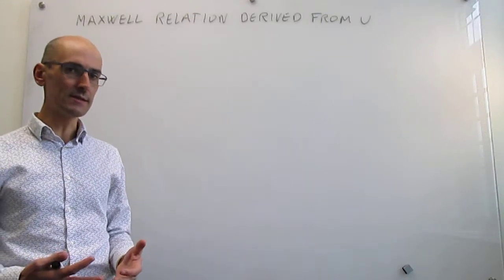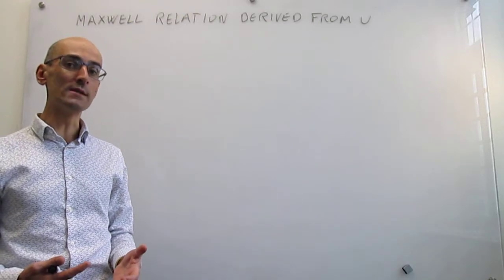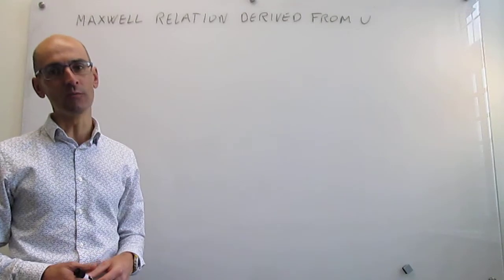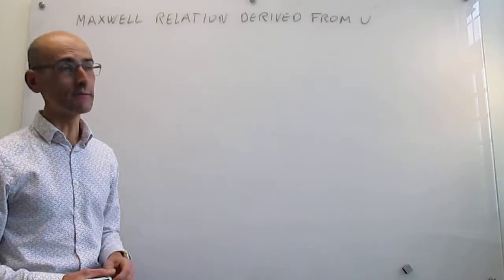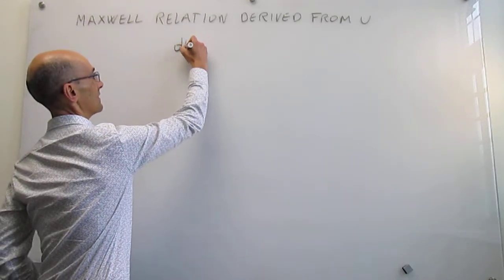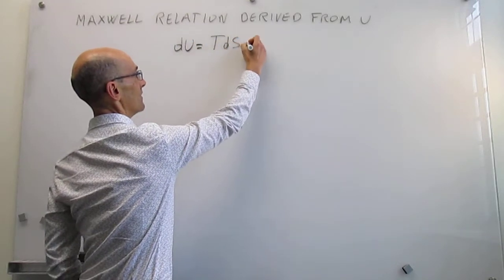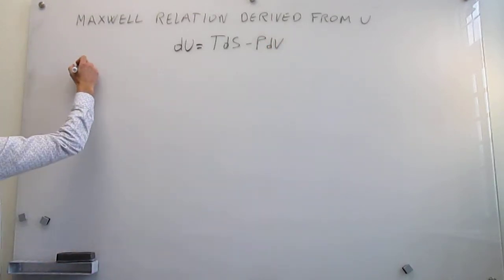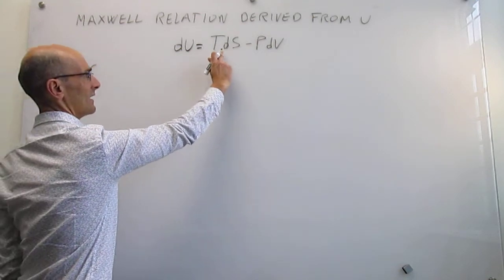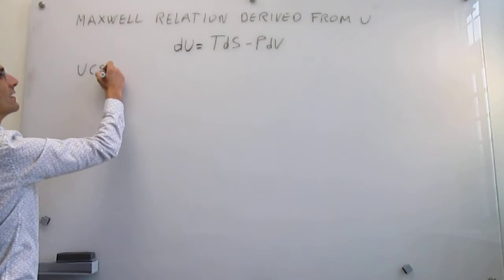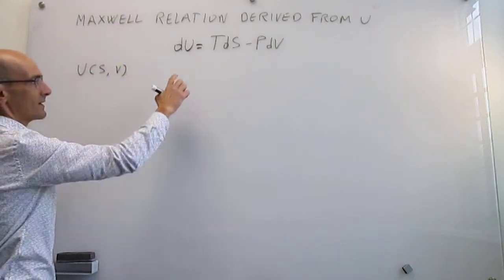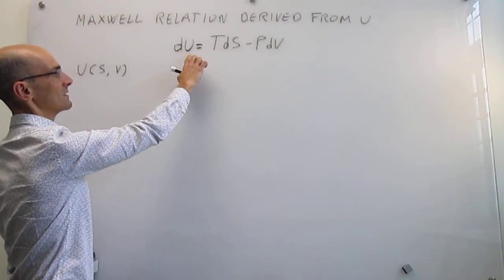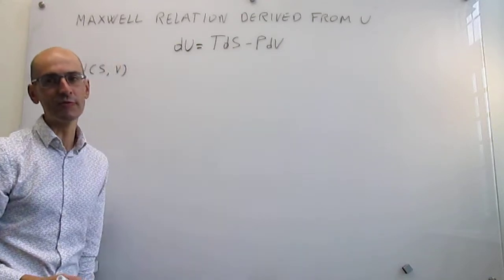The steps are pretty simple. The first step is to identify what the fundamental equation for the thermodynamic variable is. For the internal energy, we have derived in a prior video that the fundamental equation looks like this: the differential of U is equal to temperature times the differential of entropy minus pressure times the differential of volume. This means the state function internal energy has as natural variables the entropy and the volume.